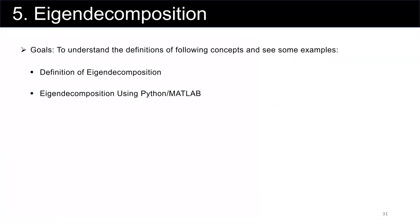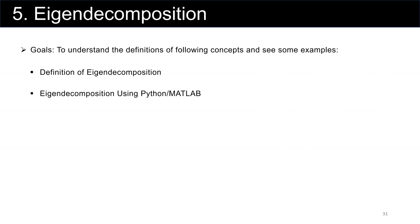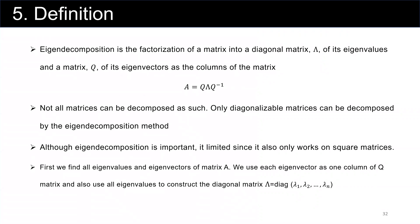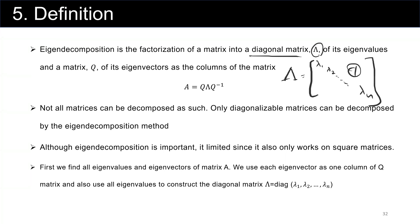First we start with the definition of eigenvectors, and then we see how we can find eigenvectors using Python and MATLAB. Decomposition is the factorization of a matrix into a diagonal matrix of its eigenvalues and a matrix Q of eigenvectors as the columns. Now I want to show you how we find this diagonal matrix. This diagonal matrix is one where only the diagonal elements are the eigenvalues.